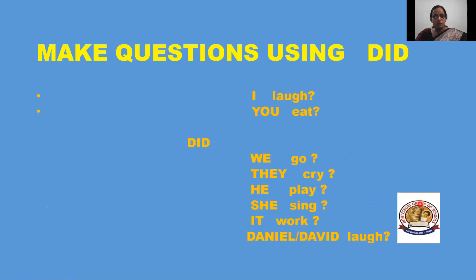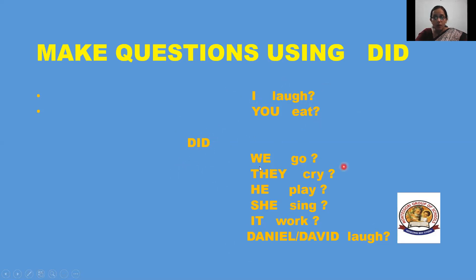Now let's see how to frame a question using did. As I told you, did goes with all. When you frame a sentence, did will be in the beginning. Did I laugh? Did you eat? If you use did, the verb should be in present tense — you can't use past tense, it will be wrong. Did we go? Did they cry? Did she sing? Did it work? Did Daniel laugh? Did David laugh? So in this way we use did to frame a question.